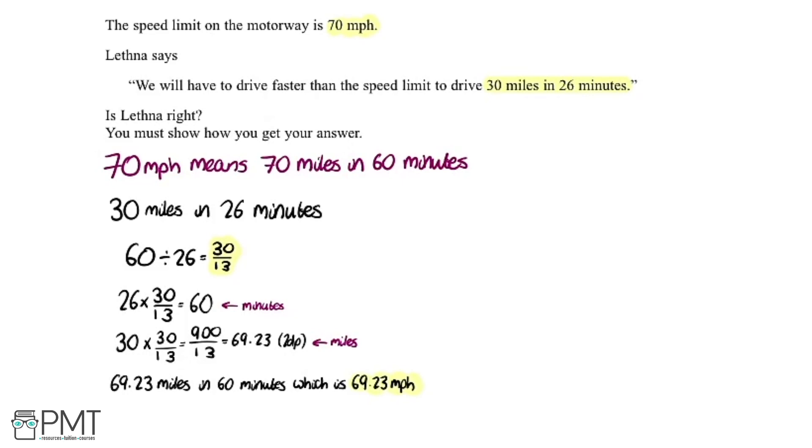So now finally we need to make a conclusion related to the statement we will have to drive faster than the speed limit to drive 30 miles in 26 minutes. Well the answer is no you won't have to drive faster than the speed limit because the speed limit is 70 miles an hour and we just worked out it's possible to do that distance in that many minutes going 69.23 miles an hour which is less than the speed limit of 70 miles an hour.